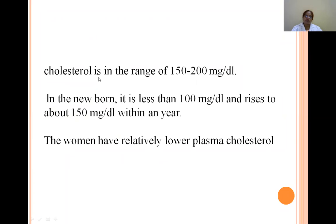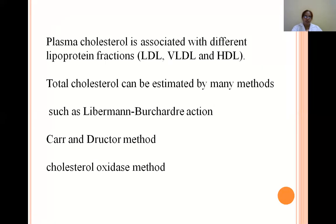The normal value of cholesterol is 150–200 mg/dL. Newborns contain about 100 mg/dL, rising to about 150 mg/dL within one year. Women have relatively lower plasma cholesterol. Plasma cholesterol is associated with lipoprotein fractions: LDL, VLDL, and HDL. Total cholesterol can be estimated by many methods including the Liebermann-Burchard reaction, Zak's method, and the cholesterol oxidase method.